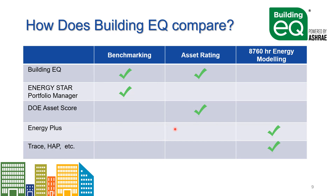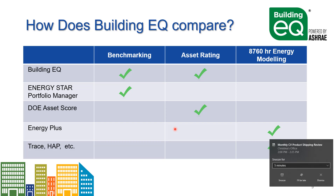How does BuildingEQ compare with other tools? One nice feature is that it provides both a benchmarking and an asset rating tool with very similar inputs — you can do one, the other, or both, and go back to add the other later. Being able to look at the building from two points of view gives a clearer picture. Energy Star is a benchmarking tool; the DOE Asset Score is an asset rating. Energy modeling tools like EnergyPlus, Trace, and HAP are full energy modeling tools designed for making design choices about buildings — which is different from benchmarking, and we don't want to confuse the two.